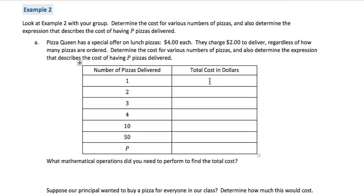If one pizza is delivered, that's $4 for the pizza, $2 for the delivery, that would cost $6. If two pizzas are delivered, that's $4 times each pizza, which is 8, plus two more for delivery, that's $10. If three are delivered, that's $12 for the pizzas, plus two more for delivery. If four are delivered, that's $16, plus two more is $18.